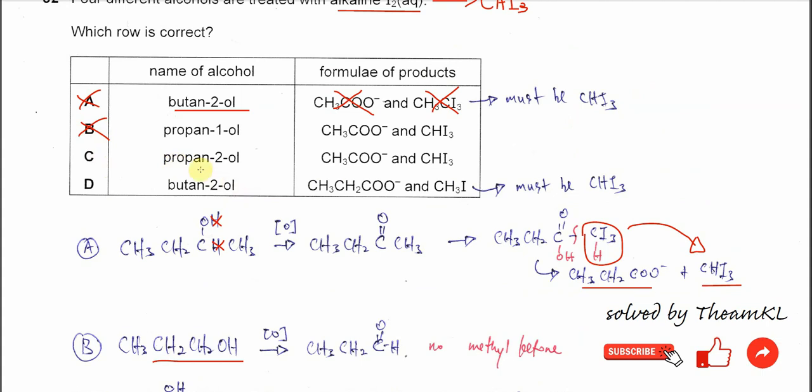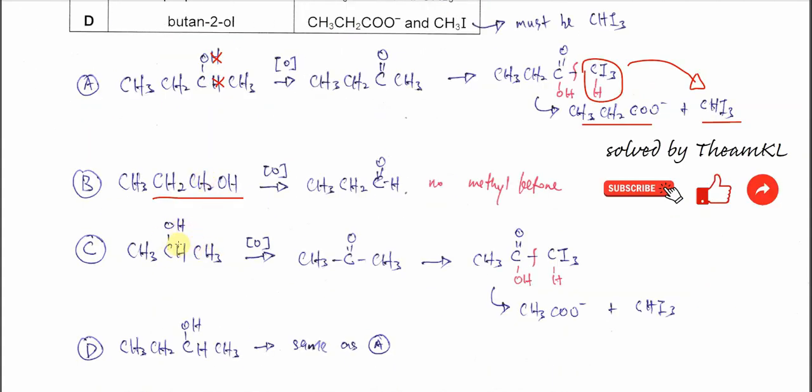For propane-2-ol, yes it has the methyl, this alcohol group CHOHCH3. So it will undergo oxidation. This one will be removed to form propanone, and propanone will undergo the two steps again, the halogenation and the hydrolysis.